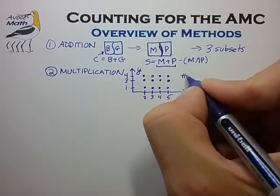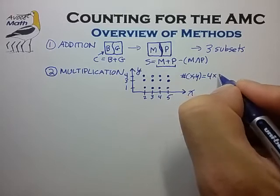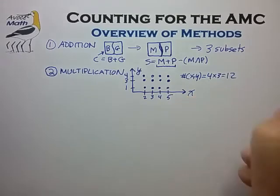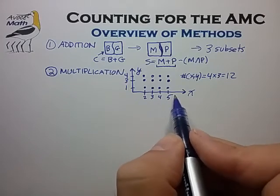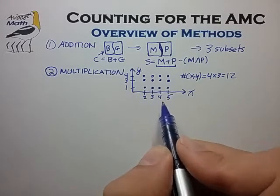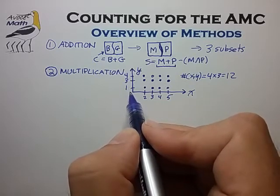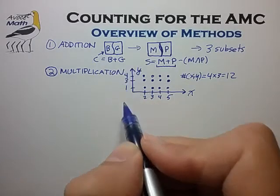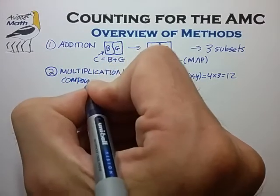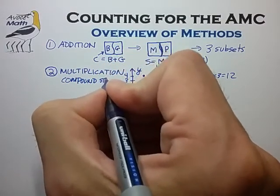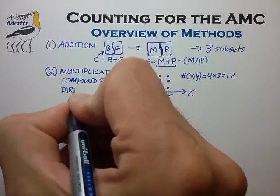In this case, the number of xy points is simply 4 times 3, which equals 12. This concept of taking a set of x values and multiplying by all possible combinations of y set values is sometimes called a compound set, and also called a direct product set.